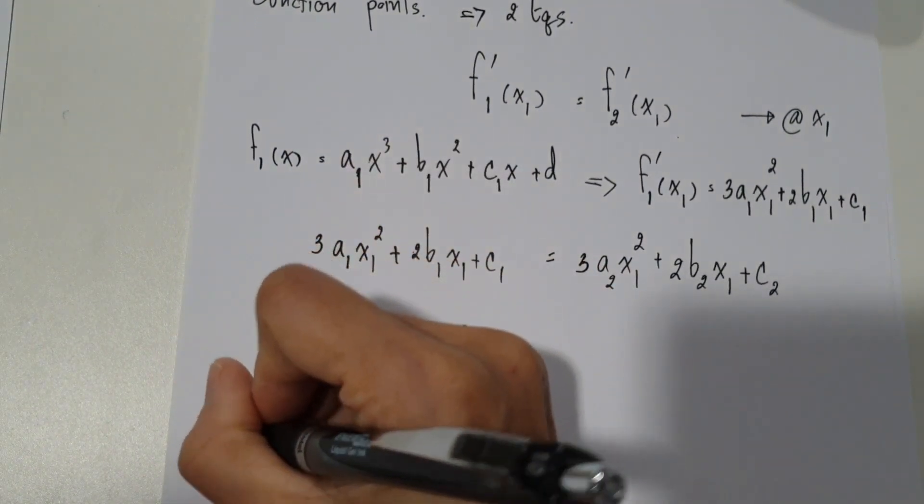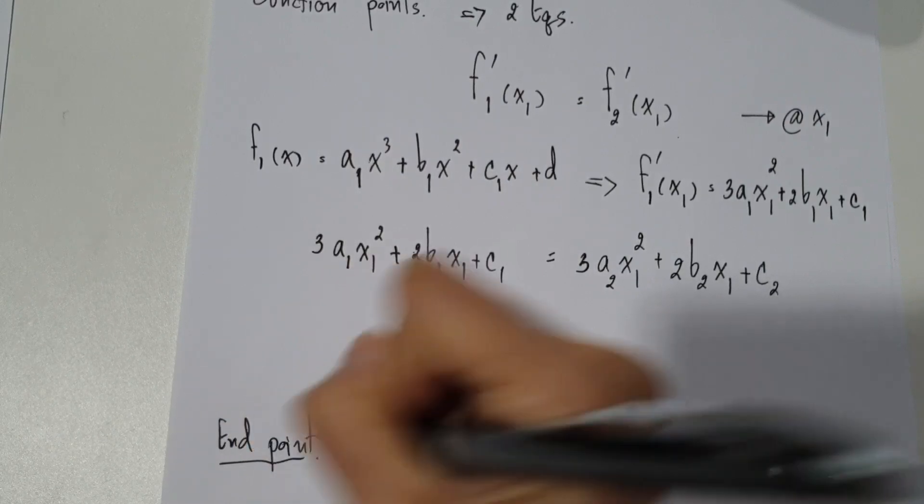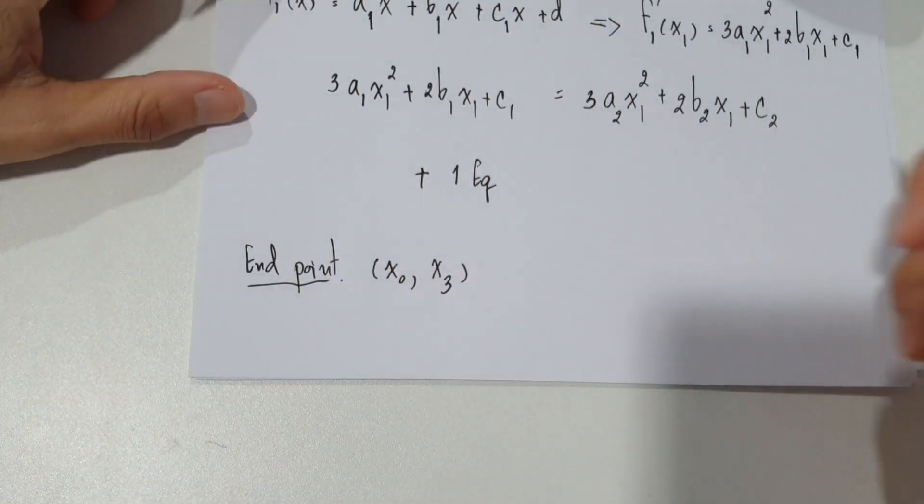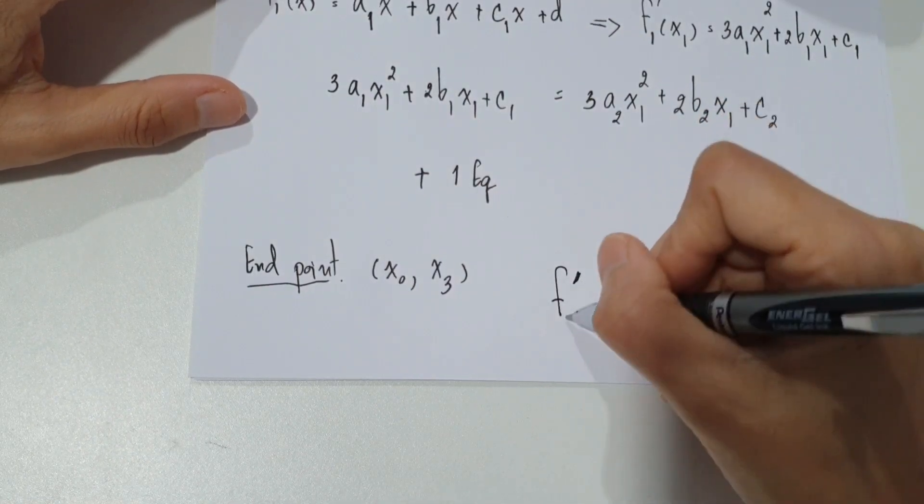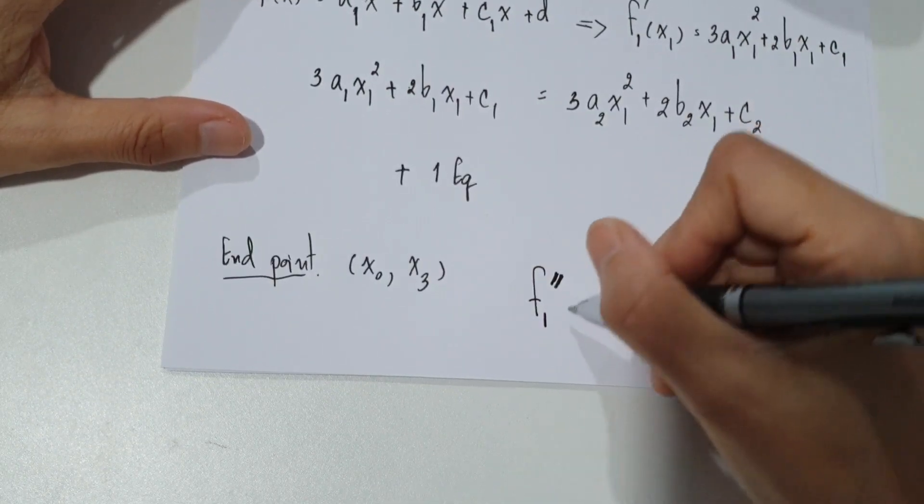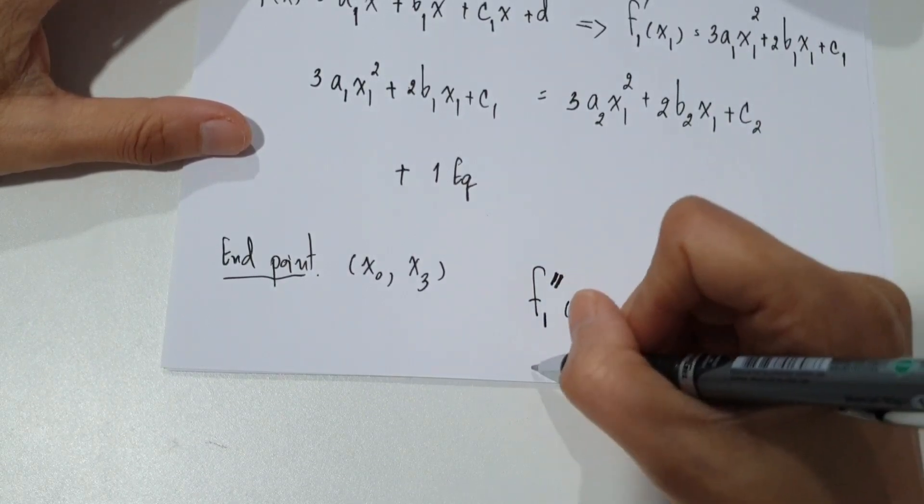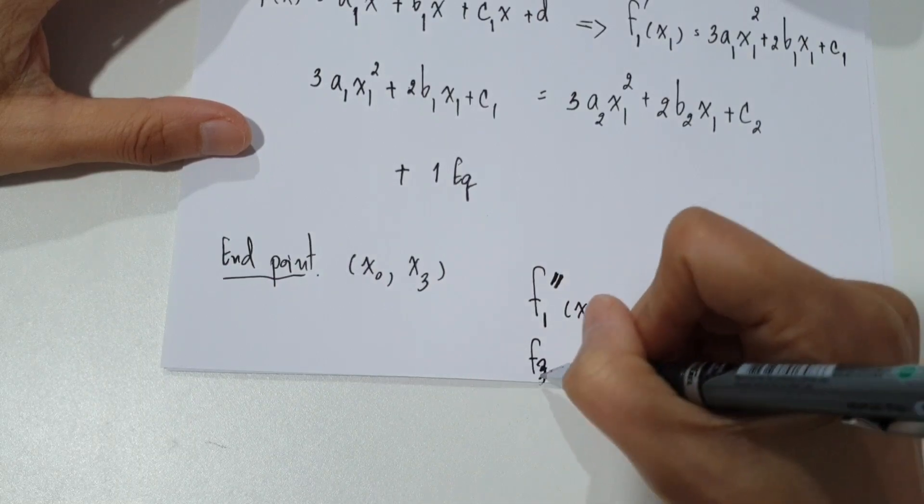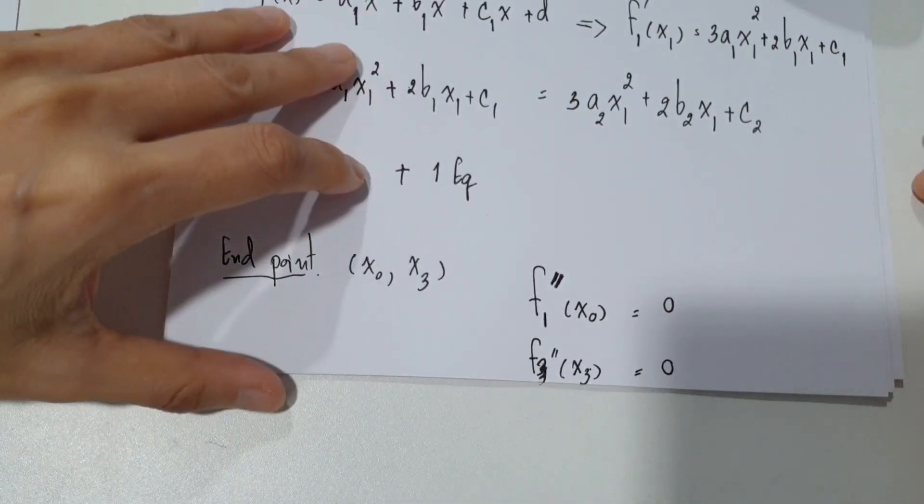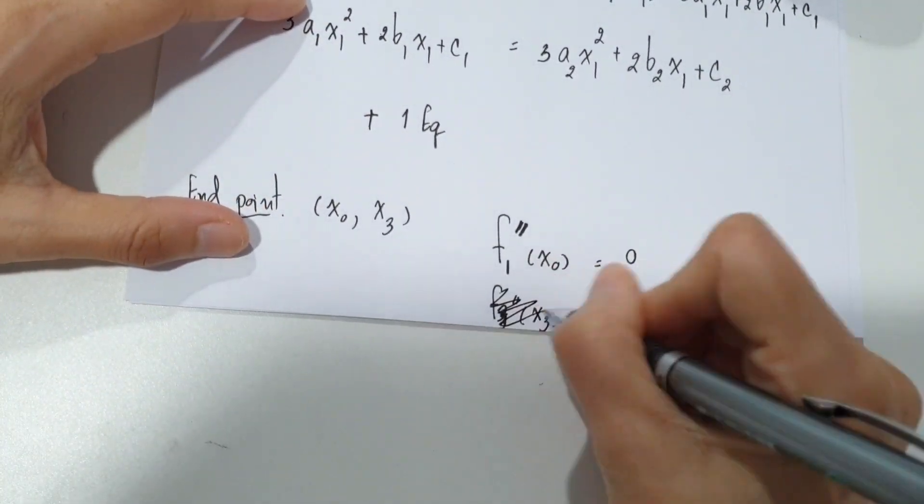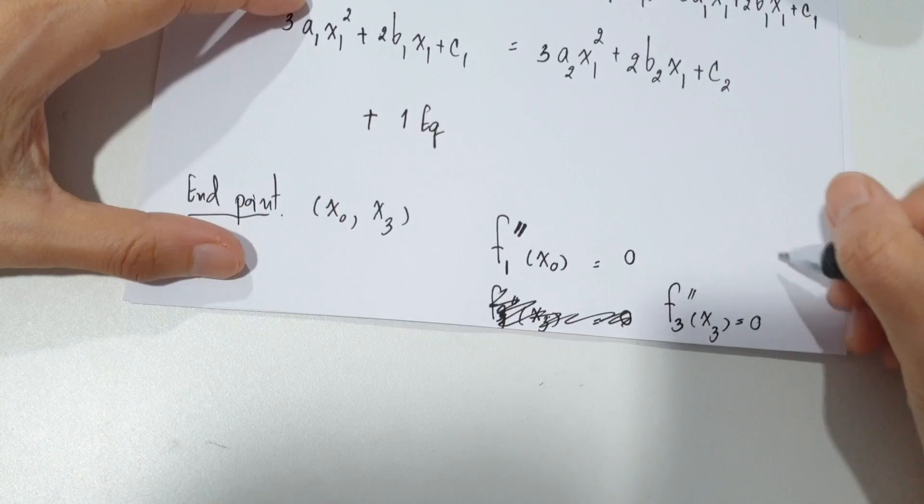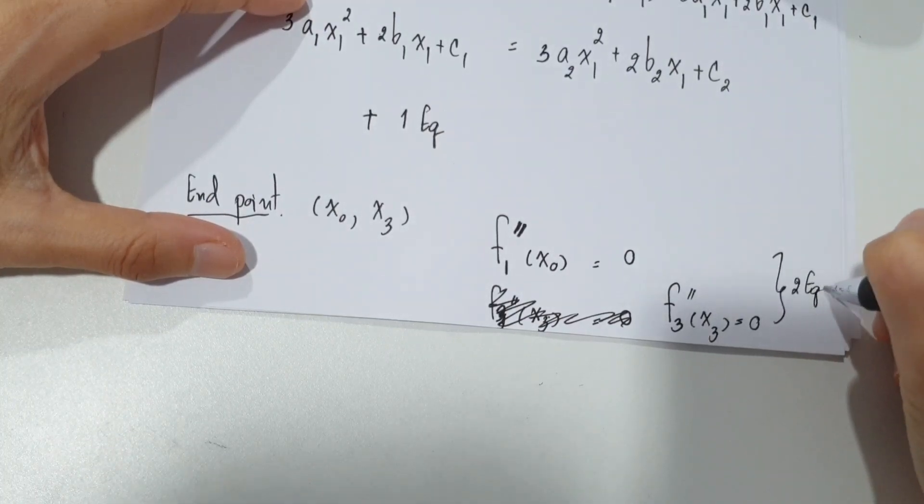At the end point - end point means at x0 and at x3 - we will assume that the second order derivative of the function that we create would be set equal to zero. So f1''(x0) equals zero, and f3''(x3) equals zero. So we get another two equations. So right now we have 10 equations.